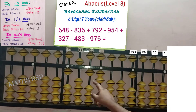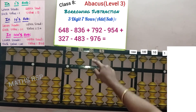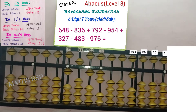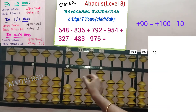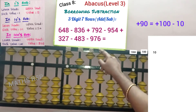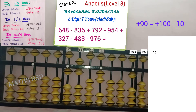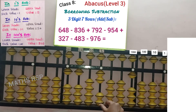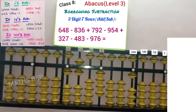Next, add 9 beads in the 10 strad. See here, only 8 beads are available to add. Hence apply big friend — 9's big friend is 1. Remove that 1 here and add the bars in the next strad: plus 100 minus 10 is equal to plus 90. 9 in the 10 strad, plus 90 completed. Next, add 2 beads in the 1 strad; beads are available, hence add 2 directly.